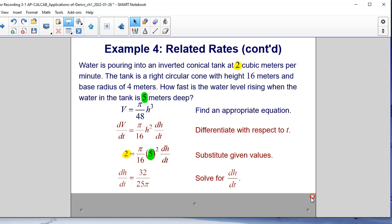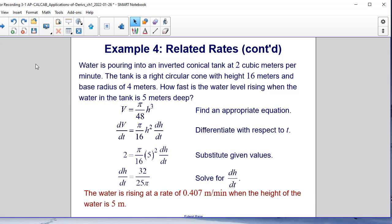Writing this out as a complete sentence, the water is rising at a rate of 0.407 meters per minute when the height of the water is 5 meters.